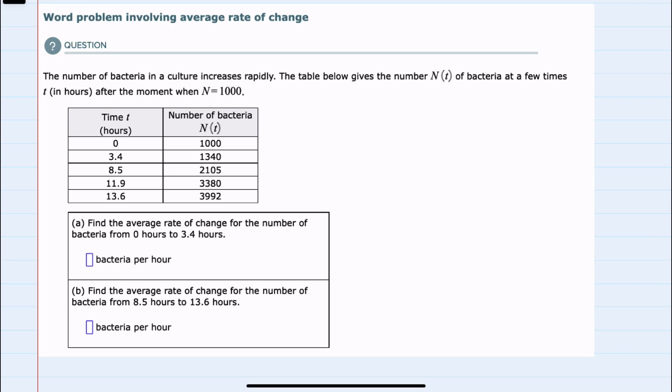In this video, I'll be helping you with the Alex problem type called word problem involving average rate of change. I'll start by recalling when I'm looking for the average rate of change, my formula is essentially the slope formula, y2 minus y1 over x2 minus x1.